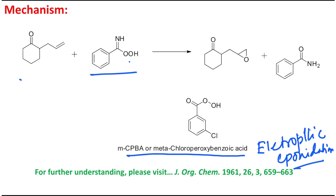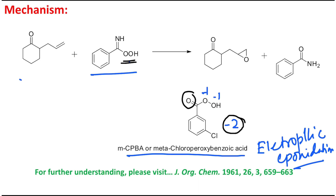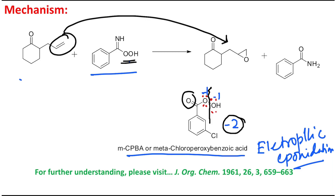MCPBA oxidizes the alkene double bond into the corresponding epoxide, and a similar property is shown here — the difference is only structural. This hydro-peroxy intermediate is the main active species. Each oxygen has oxidation state minus one, whereas oxygen's stable oxidation state is minus two, and because of the alpha effect, hydrogen peroxide is similarly reactive. So it reacts and oxidizes this alkene to the corresponding epoxide derivative.